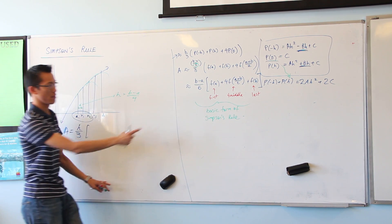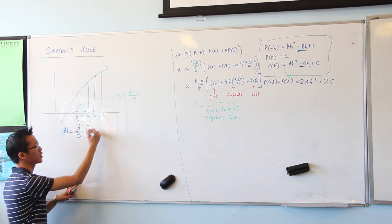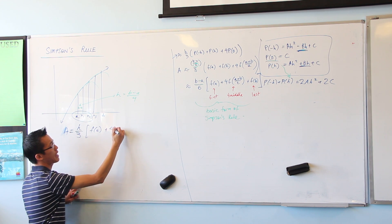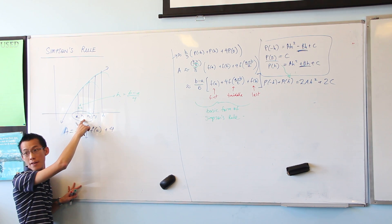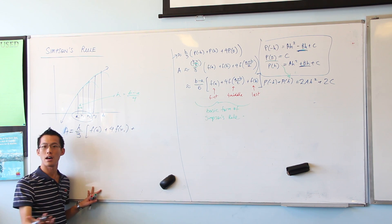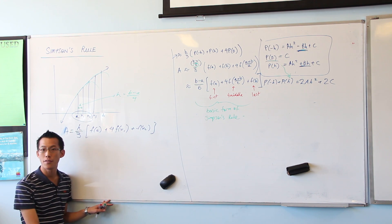Now, what are we going to have here? First, four of the middle, and then the last. So the first one is F of A. Four of the middle. That's, in this case, F of X1. And then one of the last, which is F of X2. There's my first problem.